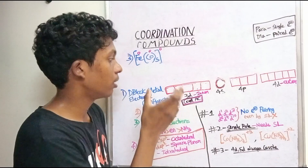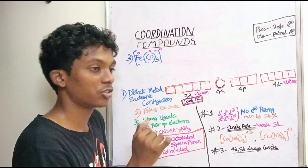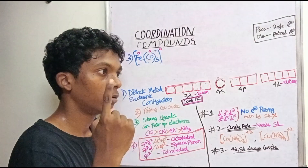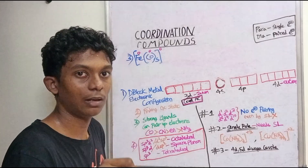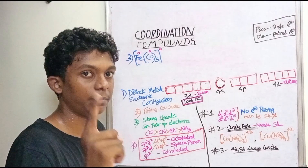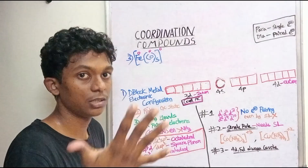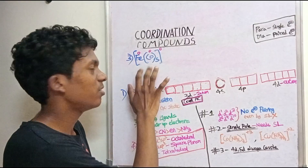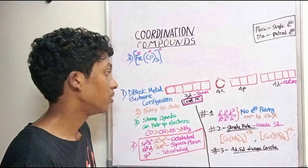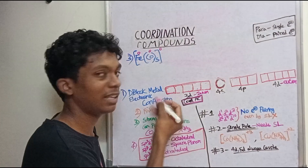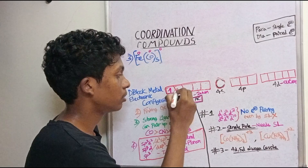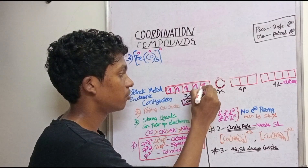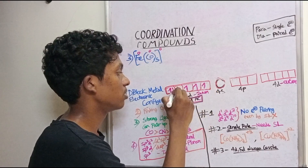The electronic configuration: Iron is D6. Going through the series: scandium, titanium, vanadium, chromium, manganese, iron — Fe is D6. So D6 has 1, 2, 3, 4, 5, 6 electrons.